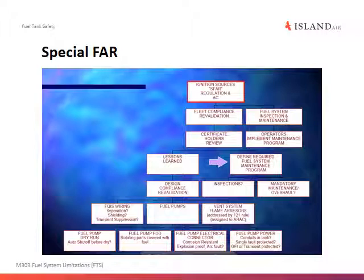This flow chart shows what needs to happen once the SFAR has been issued. From ignition sources at the top, it branches down into fleet compliance revalidation and fuel system inspection and maintenance. The fuel system inspection and maintenance trickles down simply to operators, who must implement the maintenance program. On the other side of the branch, the certificate holders' review expands into lessons learned and changes in the maintenance program, outlining more effective inspections, mandatory maintenance, and overhaul requirements.